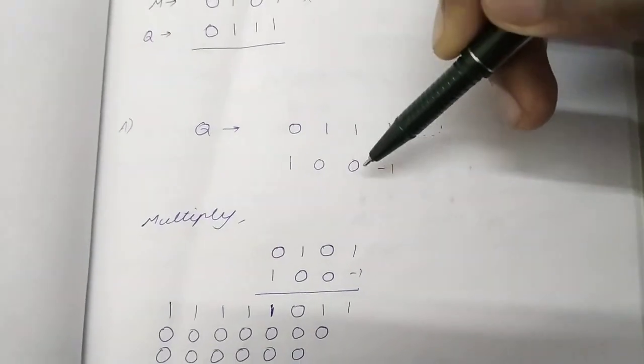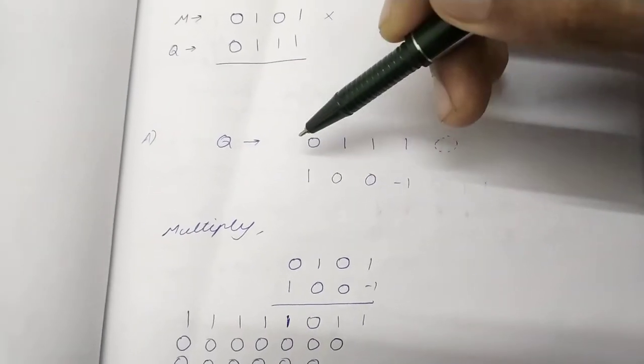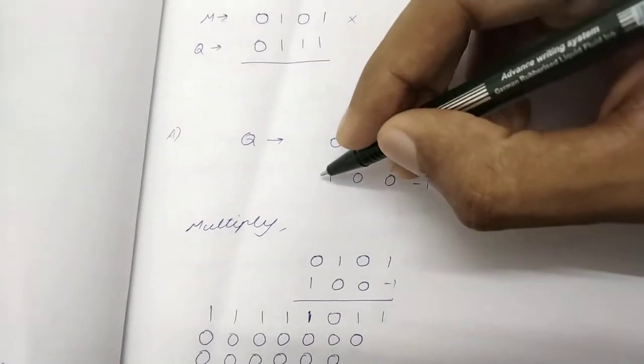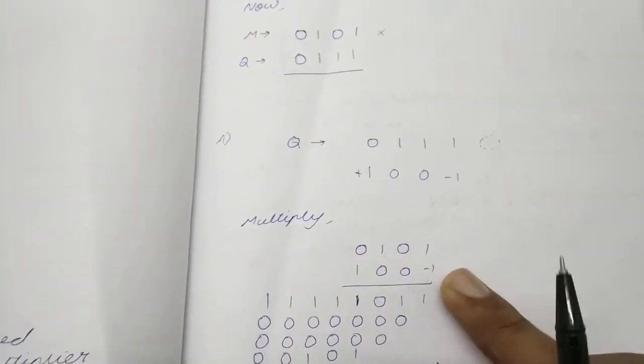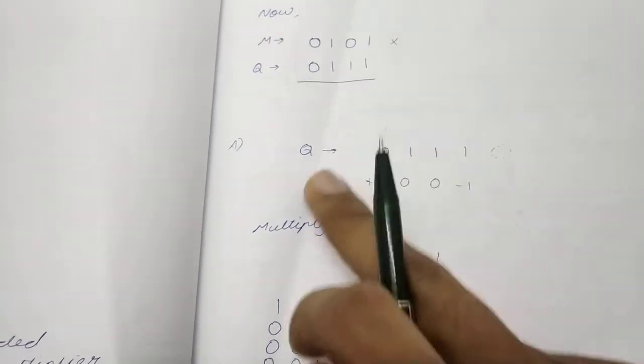This becomes 0, minus 1, minus 1, 1, minus 1, 0, 1, minus 1, 0, 1, minus 0, 1, which gives us plus 1. Now what we do is we take this multiplicand and we use the Booth encoded multiplier to multiply.